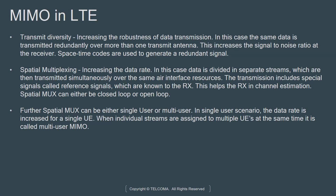Spatial multiplexing is used to increase the data rate. The data is divided into separate streams which are then transmitted simultaneously over the same air interface and resources. The transmission includes special signals called reference signals, which are known to the receiver and help the Rx in channel estimation. Spatial multiplexing can either be closed loop or open loop. In LTE we have two transmit modes: TM3, which is open loop, and TM4, which is closed loop. The difference is that TM4 uses pre-coding, which is a crude form of beamforming that yields better results than TM3.